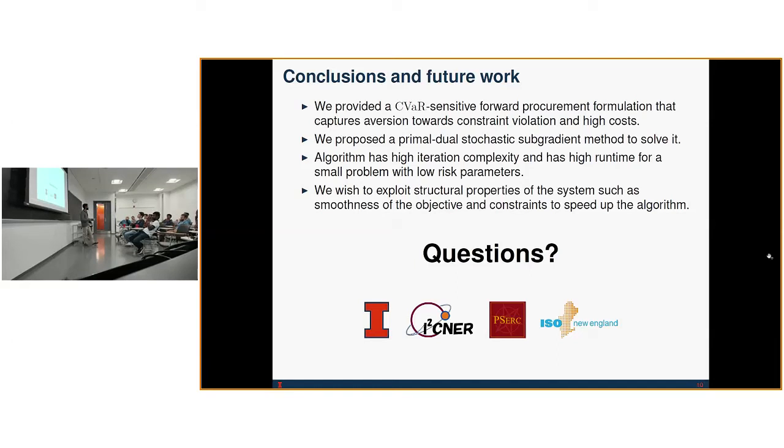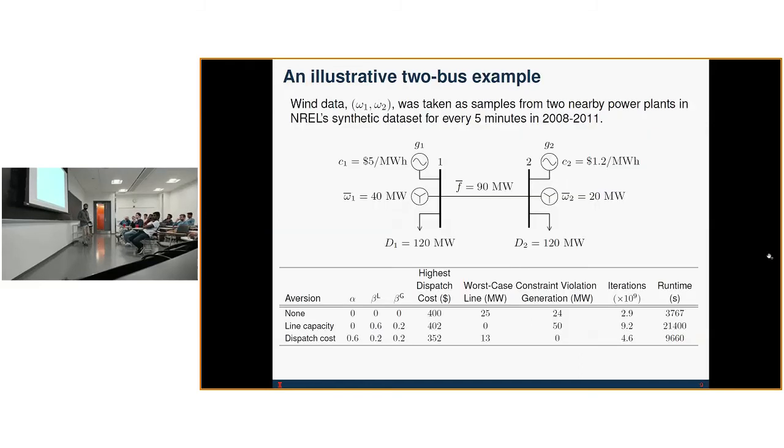That wasn't really short. Ten minutes. Can you go back one slide? What was the bottom line of your result here? Is this some kind of optimal dispatch? Energy procurement. So it's essentially economic dispatch with uncertain net demand. That 90 megawatts up there, is that the actual flow or is that the max? Max. That's the rating.